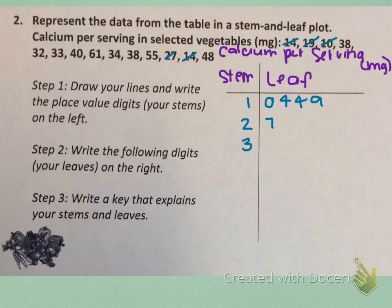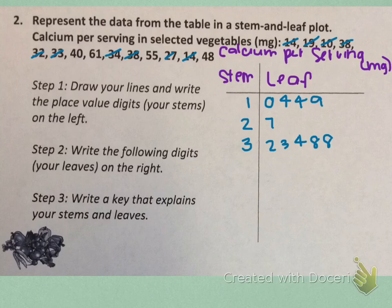Go ahead and do that, and then press play to check. All righty — so I have my leaves as two, three, four, eight, and eight. Because we had thirty-two, thirty-three, thirty-four, thirty-eight, and another thirty-eight in our data set.